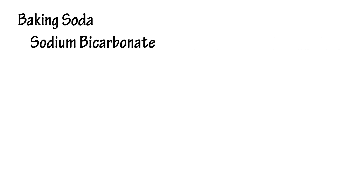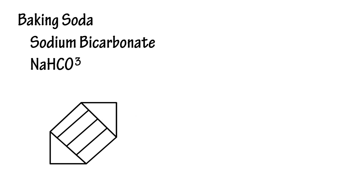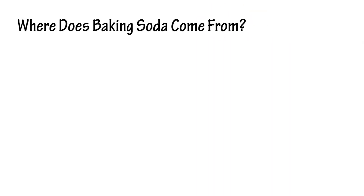What is baking soda? It is also known as sodium bicarbonate and it is a chemical compound with the formula NaHCO3. Take note that we can pull a CO2, carbon dioxide, out of that formula — we're going to use it later in the video. Baking soda is a white crystal, but often appears as a fine powder.